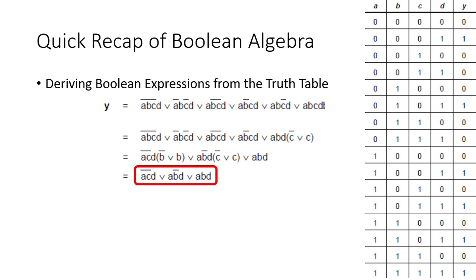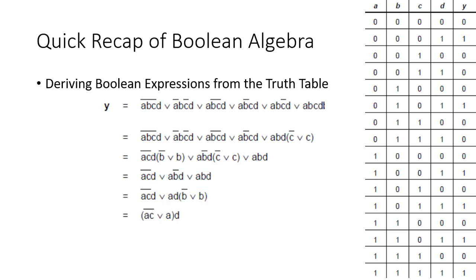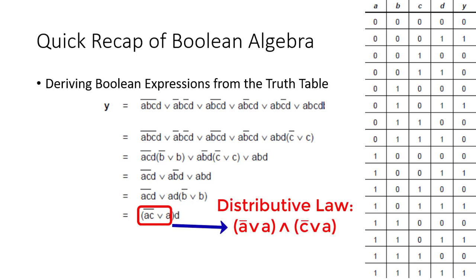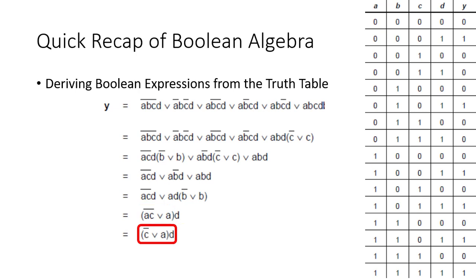Now, once again, we can take A and D common from these two expressions and then remove this portion as well. Taking D common from these expressions, we will be left with this. Now, using the distributive law, we can write this expression as: NOT-A OR A, AND NOT-C OR A. Obviously, NOT-A OR A can be removed once again, leaving us with this expression only. Opening this bracket will give us this equation, which is the simplified version of the long equation that we started with.